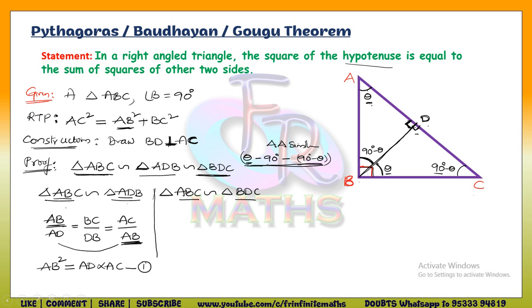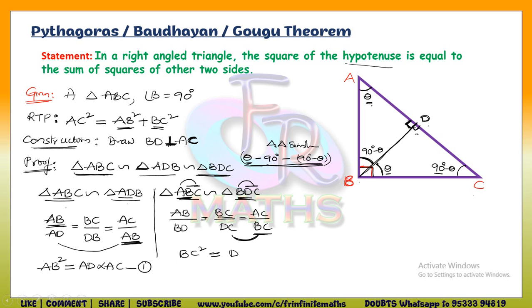Similarly, from triangle ABC similar to triangle BDC, the sides are proportional: AB/BD = BC/DC = AC/BC. Since we need BC squared, we take the ratio BC/DC and AC/BC, and on cross-multiplying we get BC squared equals DC into AC. Let this be equation number two.